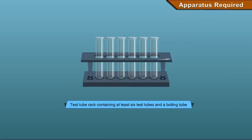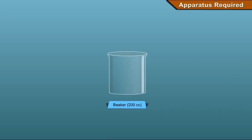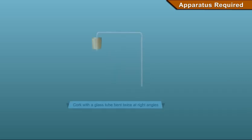Apparatus required: a test tube rack containing at least 6 test tubes and a boiling tube, a dropper, a beaker of 200 cc, and a cork with a glass tube bent twice at right angles.